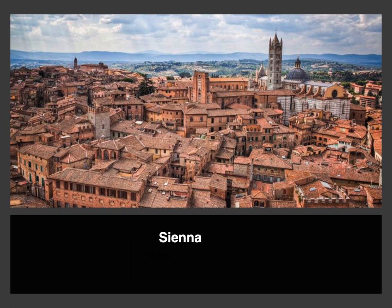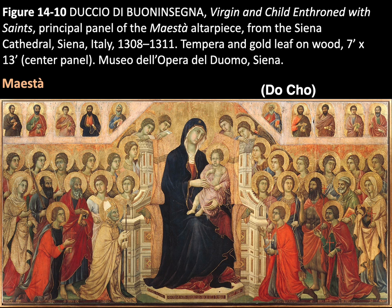Moving on to paintings done in the city of Siena. Duccio's Virgin and Child Enthroned with Saints: the Maesta is Italian for majesty. It is a short name used to describe the representation of the Madonna and child in which the Madonna is enthroned in majesty as queen of heaven, surrounded by a court of saints and angels, like you see here.